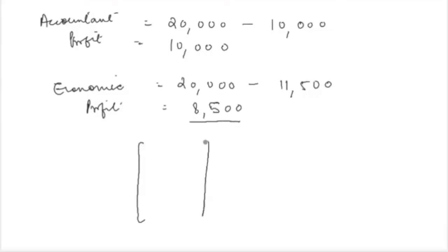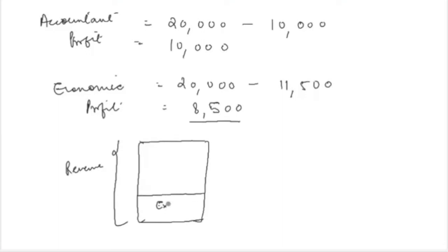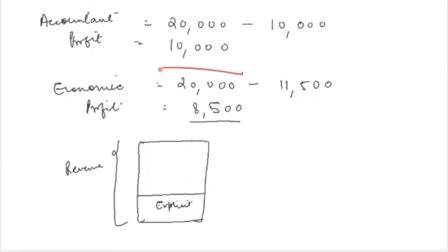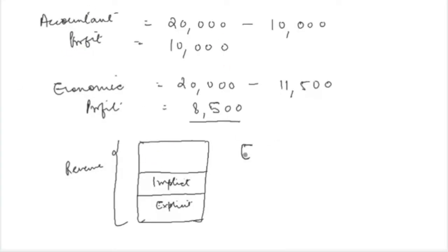If we put this in terms of a chart: take total revenue, from which you subtract explicit costs — that entire remaining area is accounting profit of 10,000. But an economist adds another layer representing implicit cost, which reduces the profit area. So the economist's perspective always shows profits as smaller than accounting profits. We can establish that economic profits are always less than accounting profits.